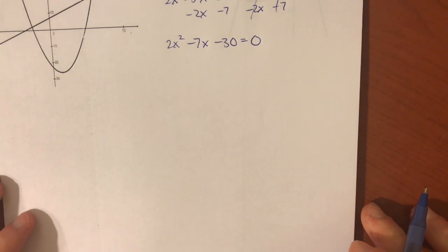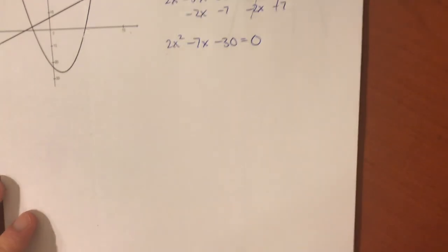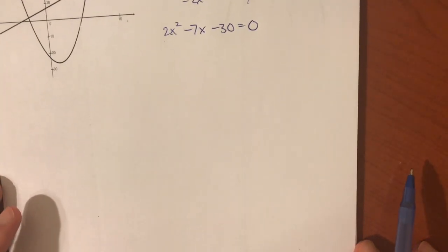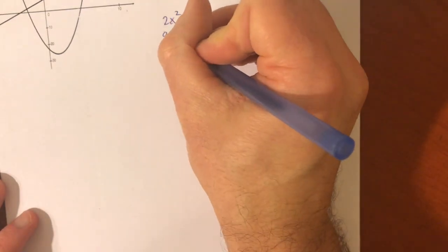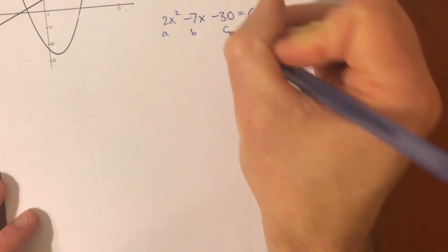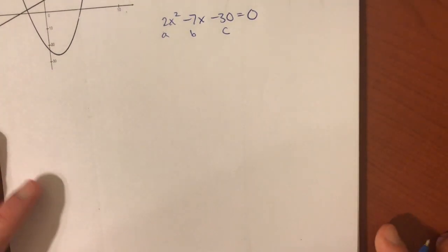Which says 2x squared minus 7x minus 30 equals zero. And I cannot factor this thing, there's no GCF, and it's 2x squared, not x squared. So, it's time for that old quadratic formula. A is 2, b is negative 7, c is negative 30.